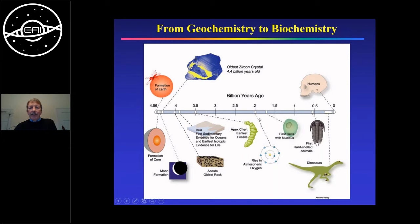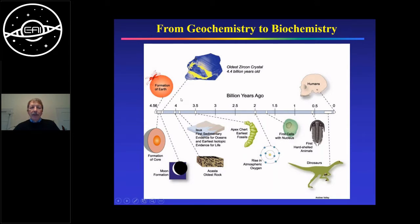At an age of about 2 billion years, there was another important event: the rise in atmospheric oxygen, which finally led to the formation of more complex species. So what we want to do is discuss the period around 4 billion years ago and see how we can actually build up molecular complexity at these early phases.